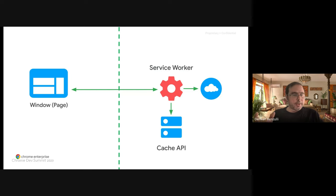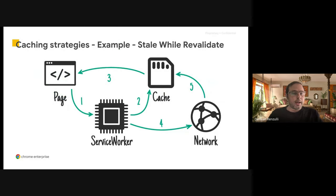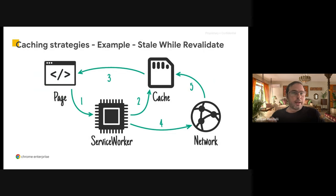The most common use case for this API is for service worker communication — to fetch some resources through service workers, which can then make decisions: for this type of URL, respond with whatever's in the cache, or always go to the network for the most recent resource. There are many different caching strategies. One example is the strategy called stale-while-revalidate. In this one, the page goes to the service worker, which intercepts the request and checks the cache. If available, it can respond immediately and simultaneously update the cache from the network.